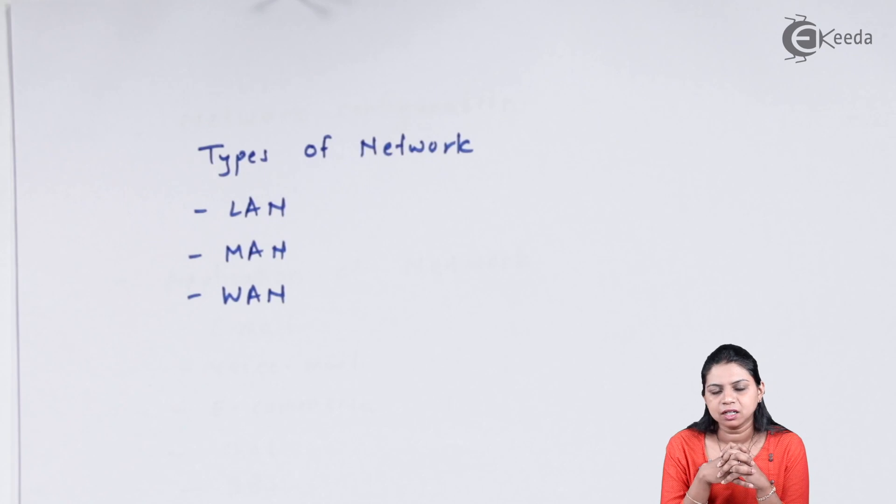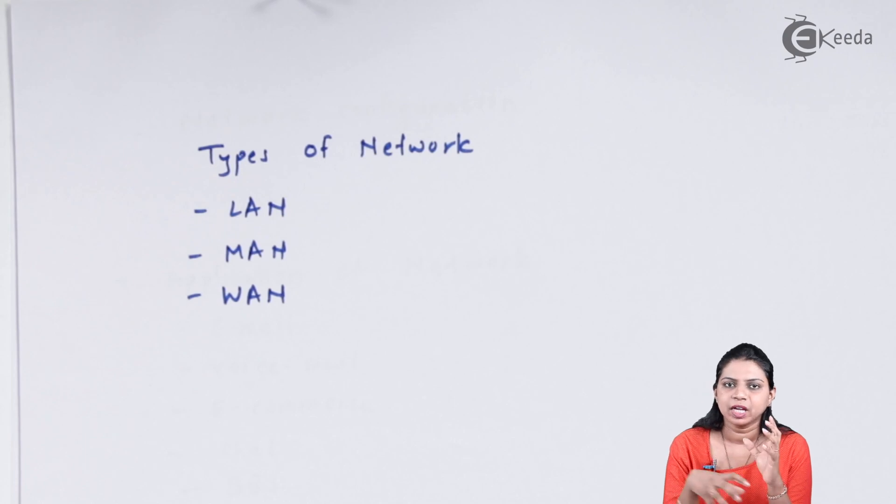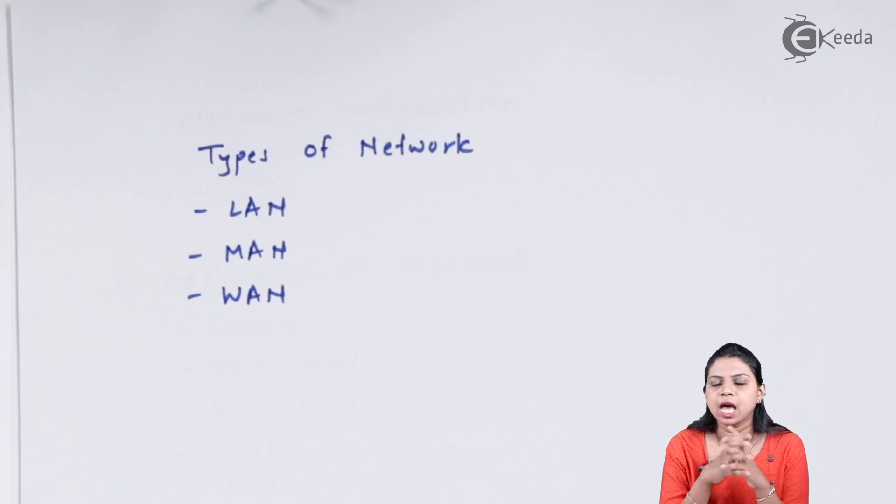Next is MAN, which is called Metropolitan Area Network. The Metropolitan Area Network can cover an entire city. Your cable network comes under the category of Metropolitan Area Network. It is bigger than LAN and smaller than WAN. I call it MAN, Metropolitan Area Network, or medium size area network.